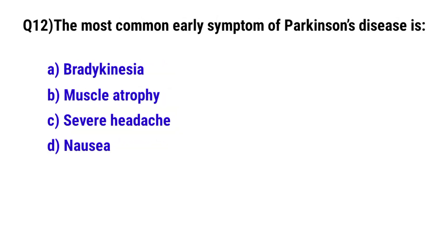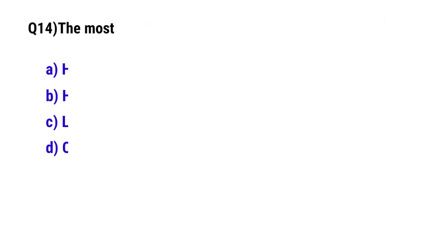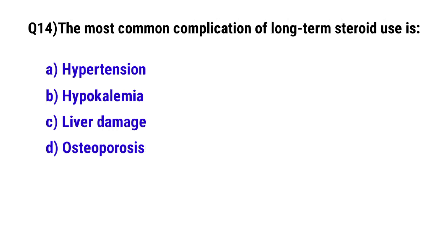Question number 12: The most common early symptom of Parkinson's disease is? The correct option is A: Bradykinesia. Question number 13: A patient with atrial fibrillation is at high risk for? The correct option is B: Stroke.